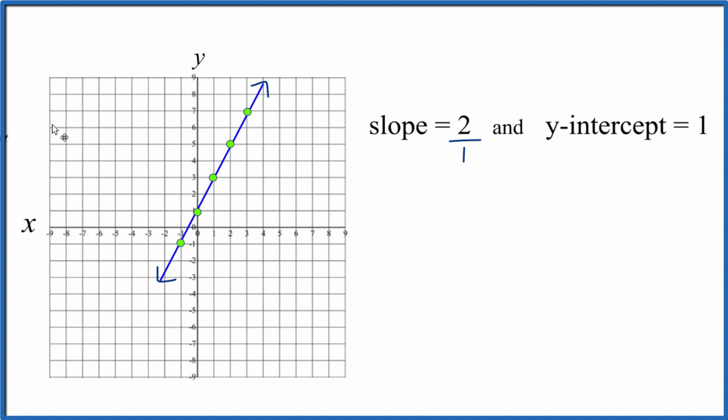If we want to write the actual equation, the linear equation for slope 2, y-intercept 1, we could use slope intercept form. Y equals mx. That's the slope we said was 2. And then we put x plus the y-intercept, we said that was 1. And there's the equation for when we have slope 2 and y-intercept 1.